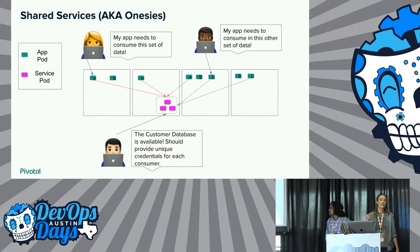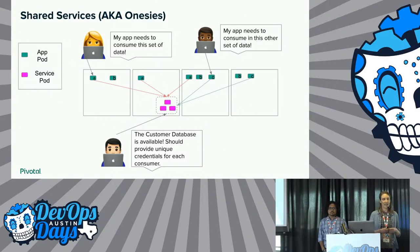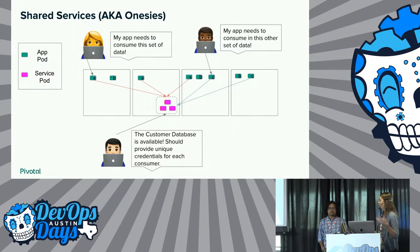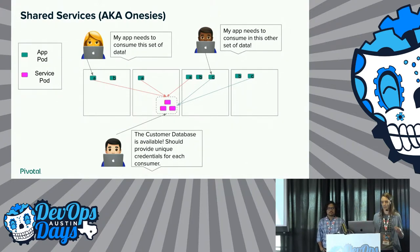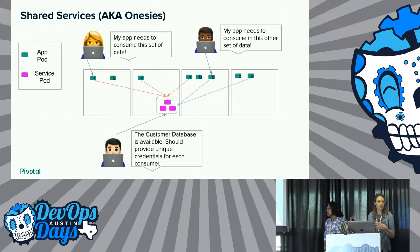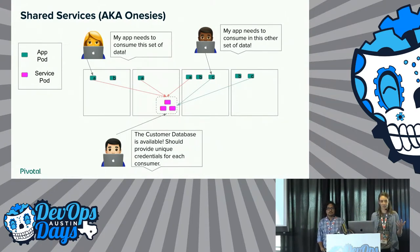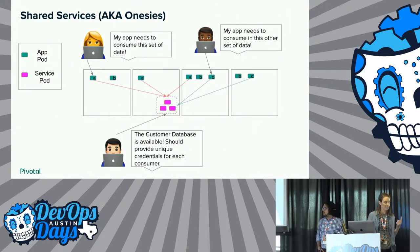The first consumption pattern is shared services. This is where you have a single instance of the service running — just one central instance — for example, a shared central customer database. You would have many teams consuming that service with different entry points and different levels of access. The service could be running co-located in the same Kubernetes cluster as the consuming applications, or externally. The idea is just one instance and multiple consuming endpoints.